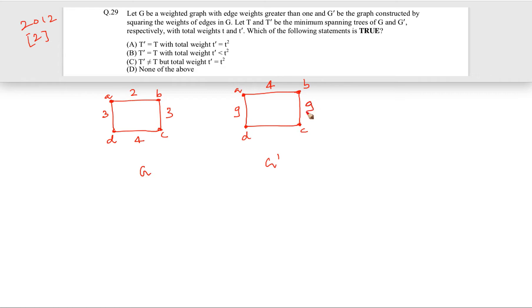So 2 becomes 4, 3 becomes 9, 3 becomes 9, 4 becomes 16. Now they are saying that let T and T prime be the minimum spanning tree of G and G prime. So for this graph we have to find the minimum spanning tree and that is going to be T, and for this graph the minimum spanning tree is going to be T prime.